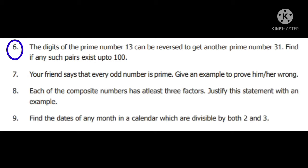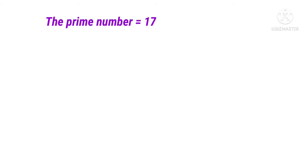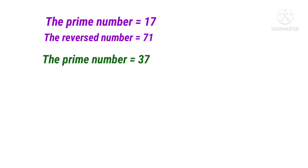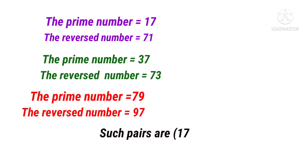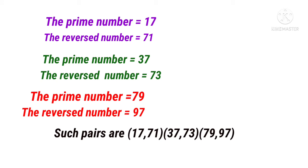Sixth sum: the digits of the prime number 13 can be reversed to get another prime number 31. Find if any such pairs exist up to 100. Taking prime number 17 – the reversed number is 71, which is also a prime number. Next, prime number 37 – the reversed number is 73, also a prime number. Next, prime number 79 – the reversed number is 97, also a prime number. So such pairs are: 17 & 71, 37 & 73, 79 & 97.